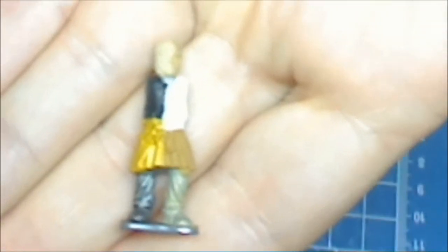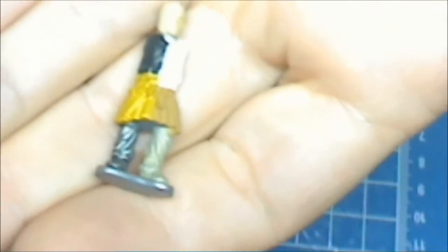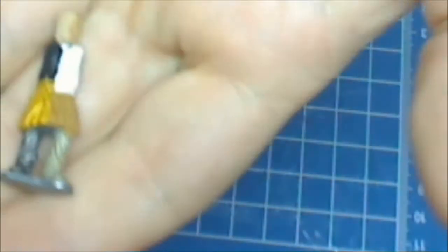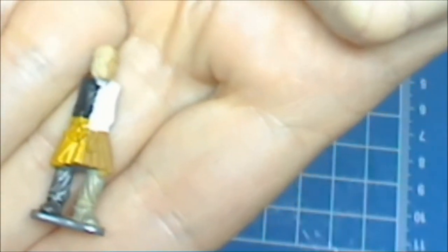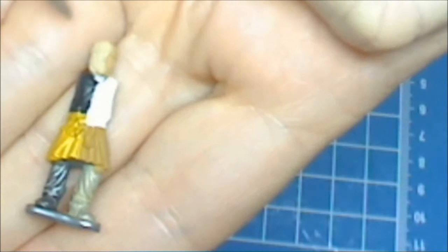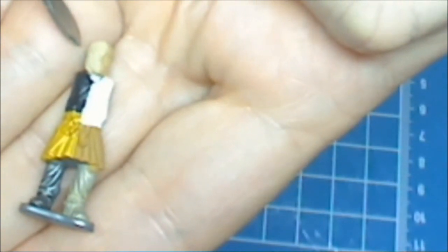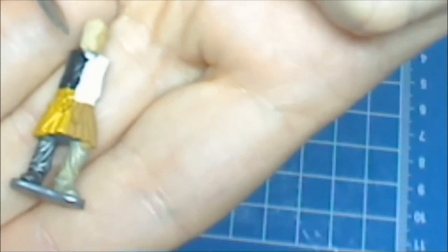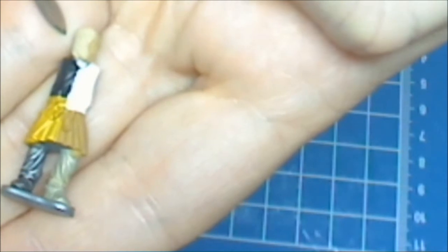But here is the miniature with some test paints on it. Let's see. Here is Reaper's Golden Flesh. This is two coats of Golden Flesh over the silver primer.